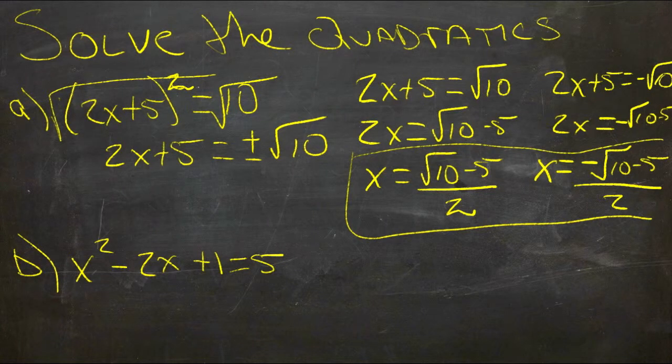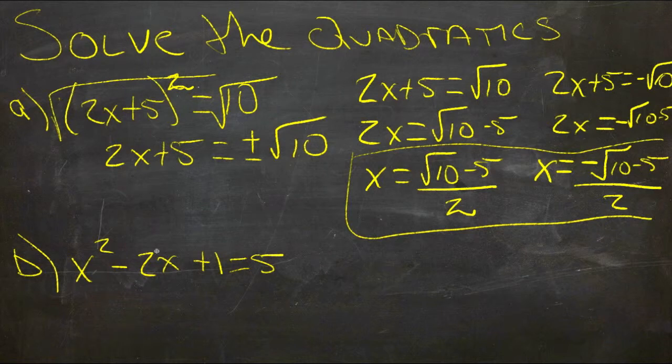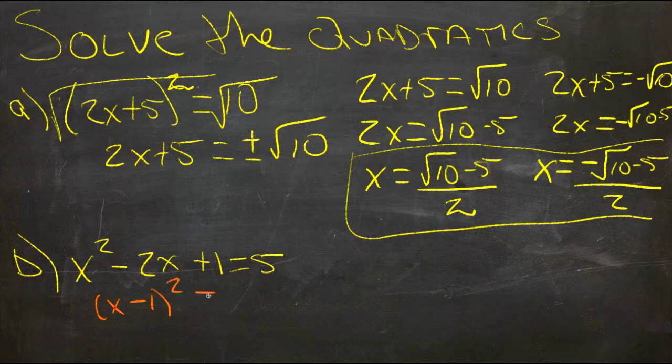For the second example, let's change colors here. First thing we probably want to do here is factor the equation if we can. Looks like this is a perfect square, so we'd end up with x minus 1 quantity squared equals 5.